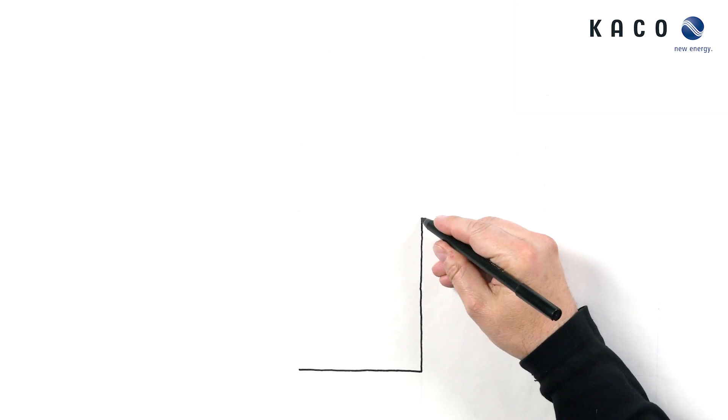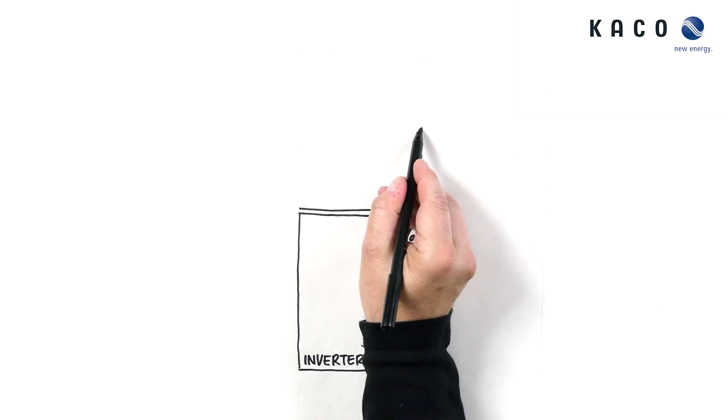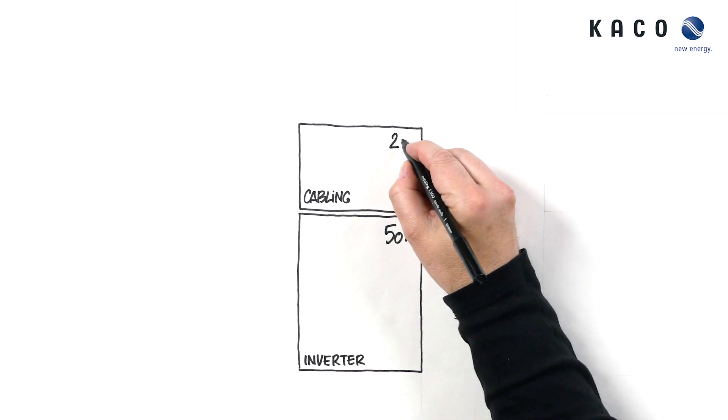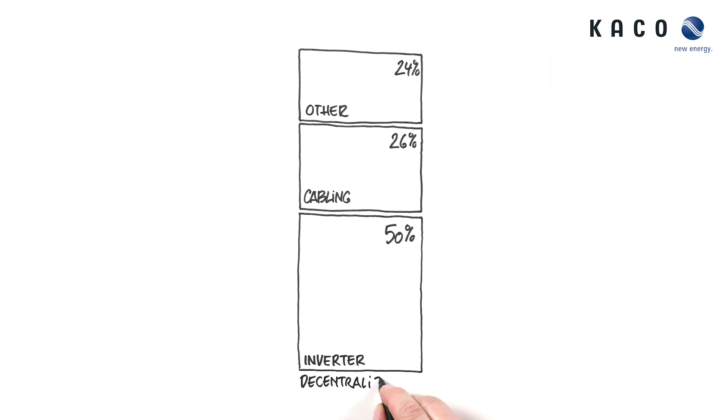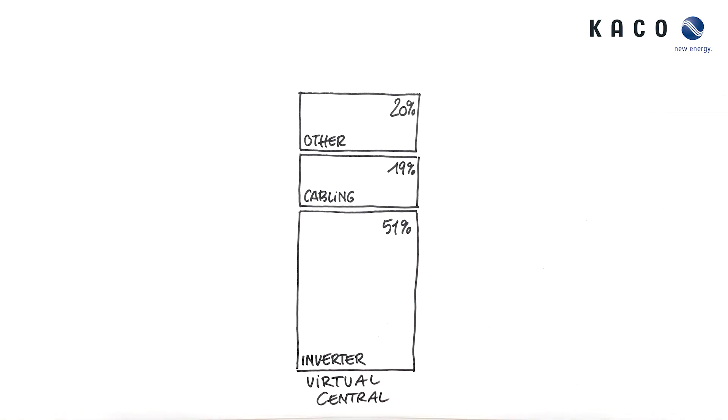And that's what this does to your investment in BOSS. Watch! These are the capital expenditures for material and labor following a decentralized layout. And this is the invest for the virtual central approach.